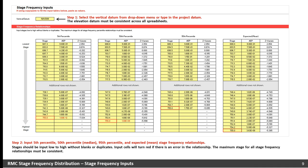This data will be provided by your H&H engineer and will typically come from RMC RFA. You are allowed 50 inputs and may have to trim down the data you are given. If you must trim the data, be sure to include all inflection points when defining these relationships. The stages should be input from low to high without blanks or duplicates. When copying and pasting data, always paste as values. The maximum stage for all the different stage frequency relationships on this sheet must be consistent.